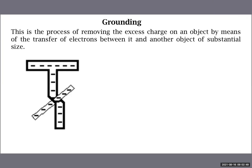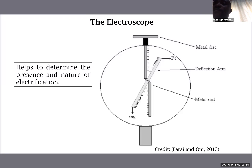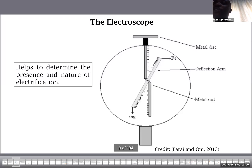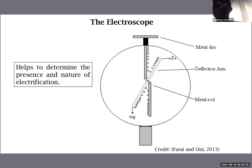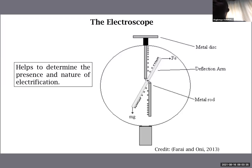Student question (Vanessa): About the gold leaf electroscope — the magnitude of the charge, I don't understand what you meant. Instructor: I spoke about deflection — the magnitude of the charge brought to the metal disc determines the angle of deflection of the deflection arm. When the charge is small, the deflection is small; when the charge is large, the deflection is larger.